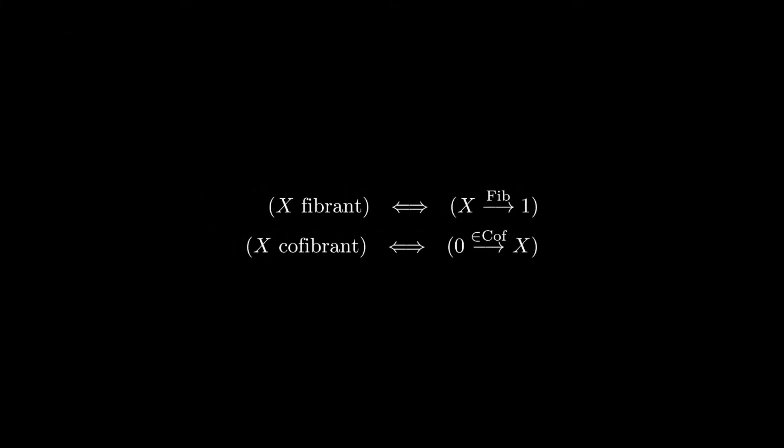So here's a useful definition that the nlab doesn't include explicitly, but I've included for completeness. An object x is said to be fibrant if and only if the map from x to the terminal object is a fibration.